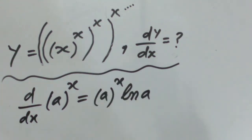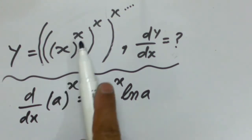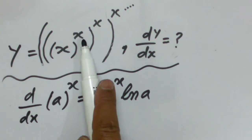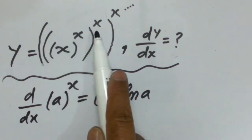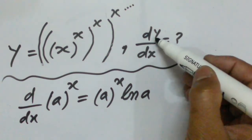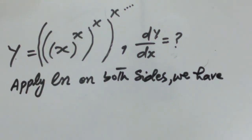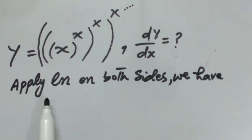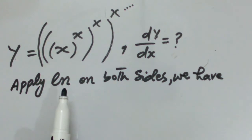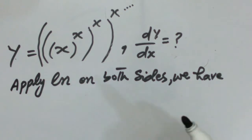For the given function, both the base and the power are within the range of the derivative operator d/dx, and the whole power is again under the same derivative operator. So in this case, both formulas fail to apply. Therefore, we are going to apply natural log on both sides of the given function to convert it to its equivalent form.